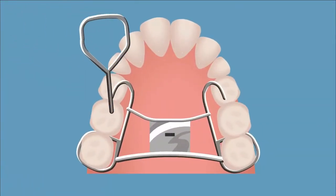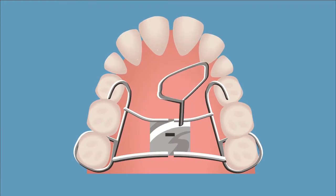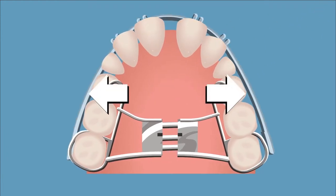Rapid palate expanders widen the arch to allow for proper tooth alignment. A key is turned at regular intervals which widens the expander and the arch, or the roof of the mouth.